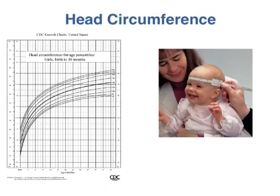Head circumference is also tracked over time in children as an indicator of brain growth until approximately three years of age. Decreased growth in head circumference may indicate under-nutrition, but it may also indicate a developmental disorder preventing growth of the brain.